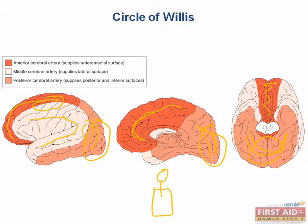So the eyes don't have a problem. You're able to actually get the information to your brain. However, your brain then has problems identifying what is happening. A very specific agnosia that you may encounter on a question is prosopagnosia. This is the inability to recognize faces, and the famous neurologist Oliver Sacks actually suffers from this. This is the guy who wrote the book, The Man Who Mistook His Wife for a Hat.